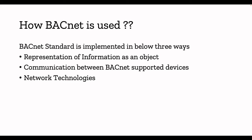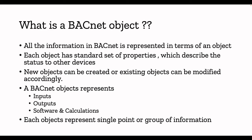We will see a list of network technologies supported by BACnet, and we'll focus mainly on BACnet/IP, since in the Internet of Things today everything is IP-based. So what is a BACnet object? All information in BACnet is represented in terms of an object. Each object has a standard set of properties which describe the status to other devices. If one BACnet device needs to request data from another, it calls the object, specifies what property it wants to read, sends the request, and gets the data.